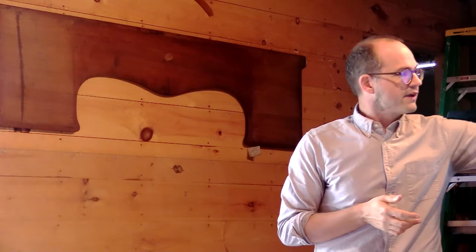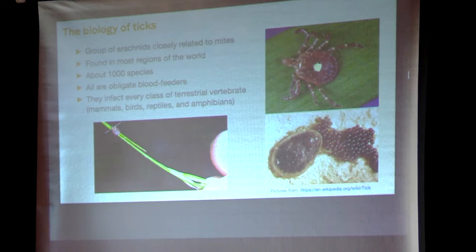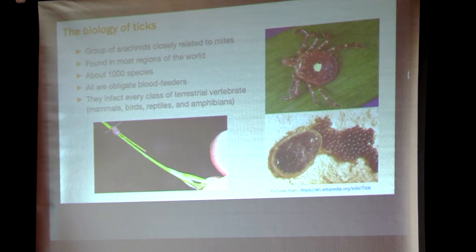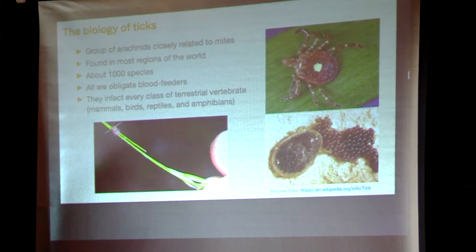Blood feeding happens on any terrestrial vertebrate — every class of vertebrates has ticks that feed on them. We know about mammals, but ticks also feed on birds, reptiles, and more rarely amphibians. Here we can see some diversity of ticks: a dog tick on a blade of grass waving its first pair of legs to grab a host, the lone star tick found further south, and a soft-back tick laying her eggs.